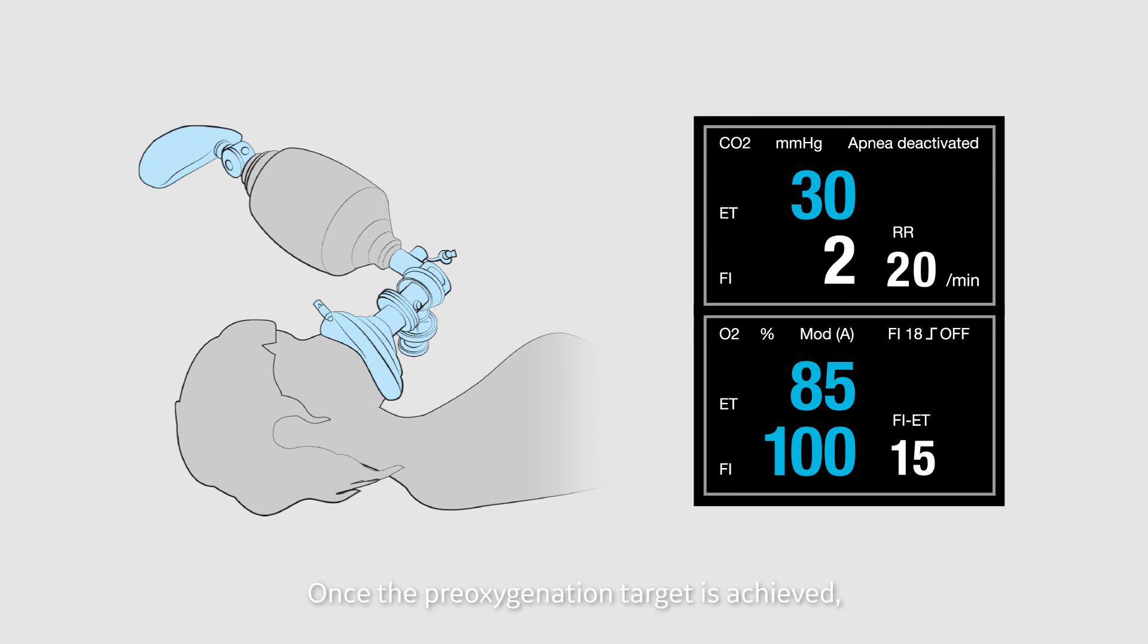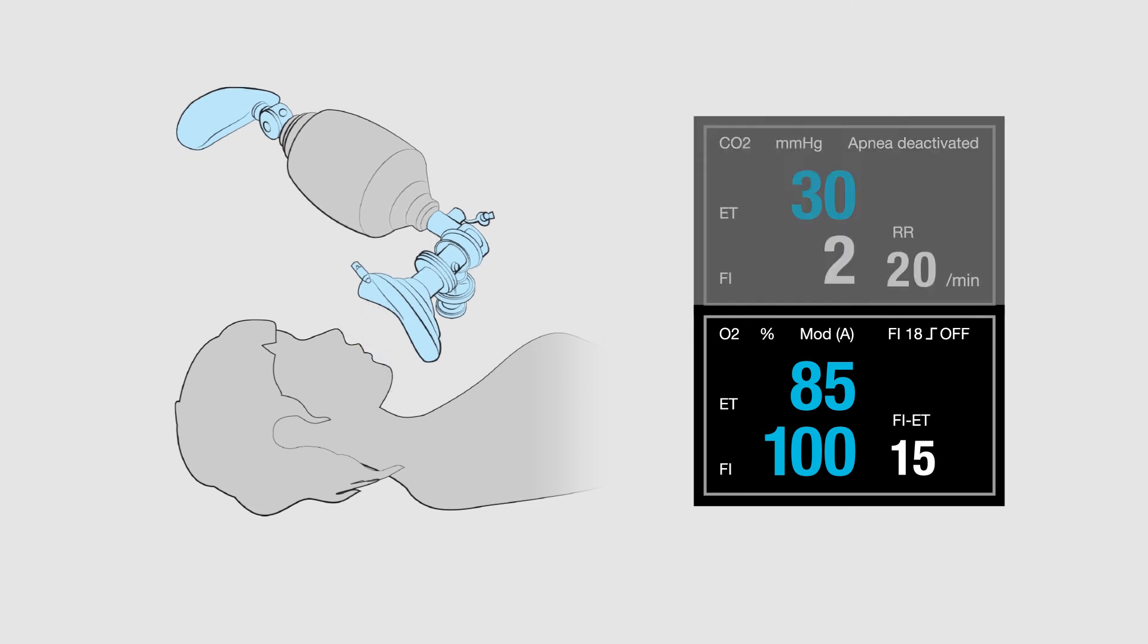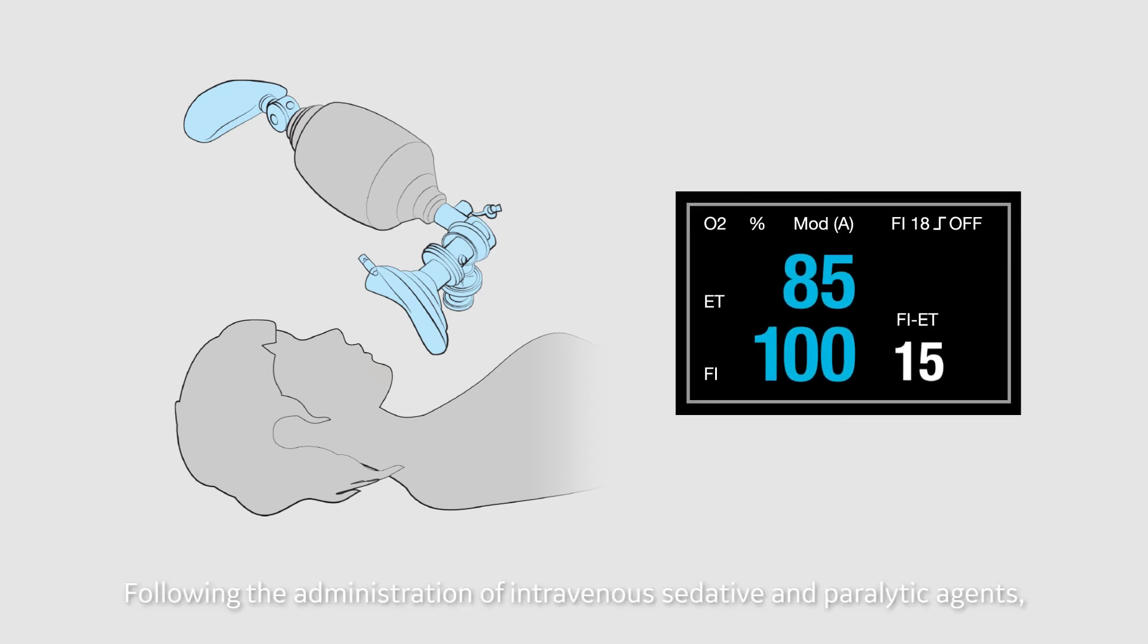Once the pre-oxygenation target is achieved, the RSI procedure will ensue. Following the administration of intravenous sedative and paralytic agents, intubation can now occur and then a switch of the patient's breathing circuit to a mechanical ventilator.